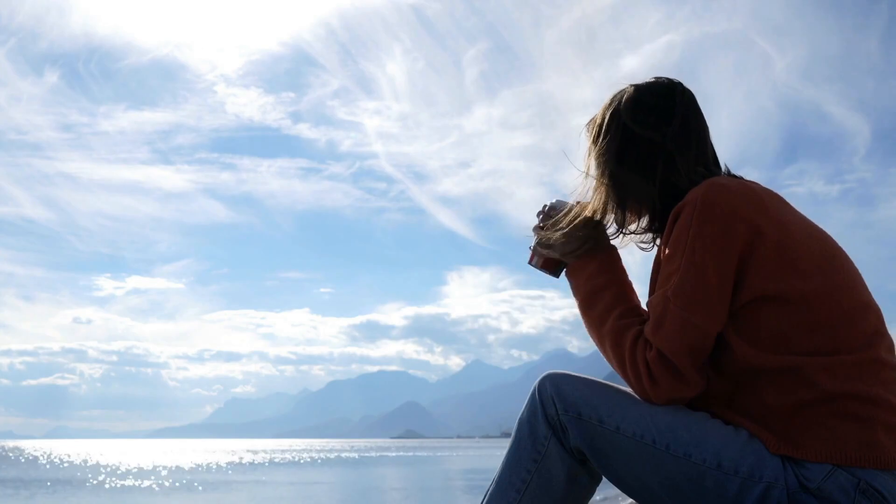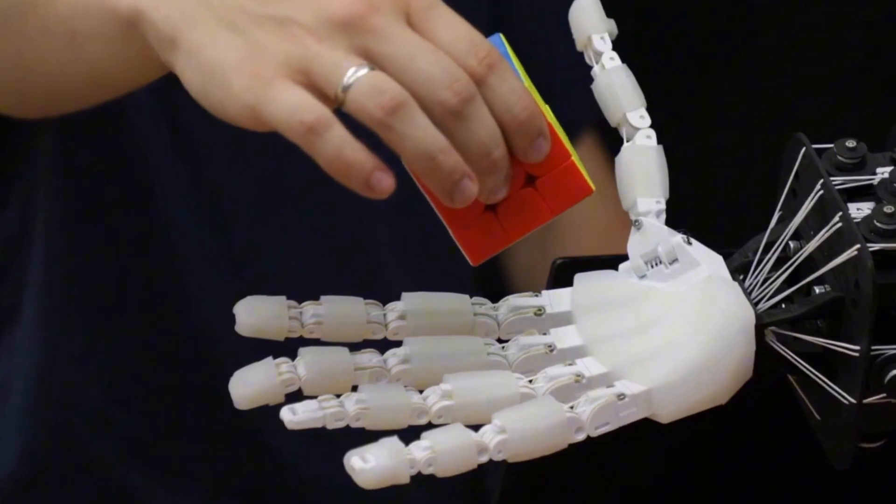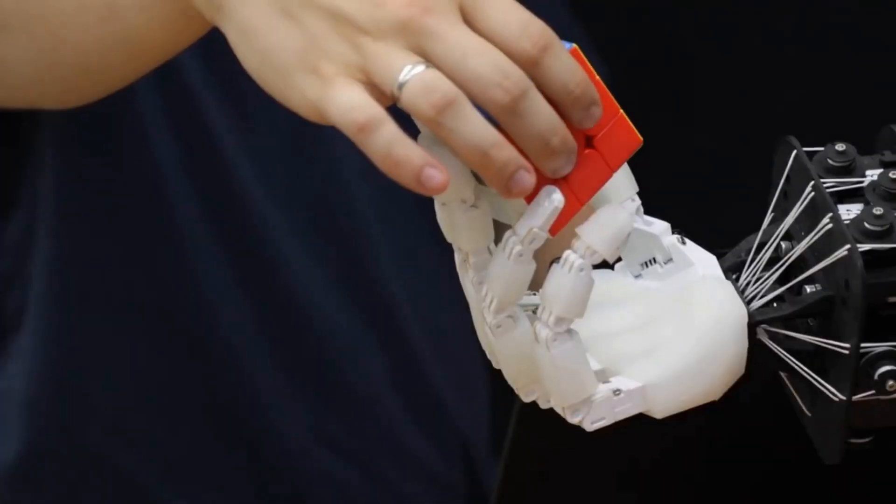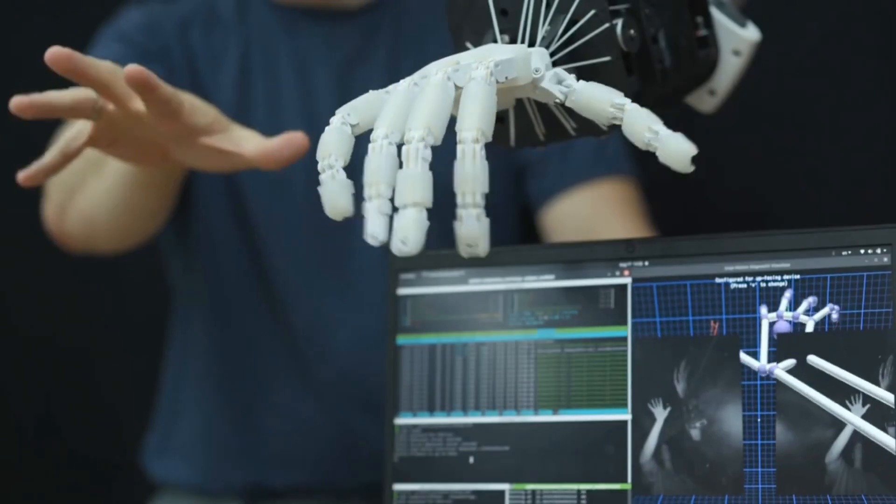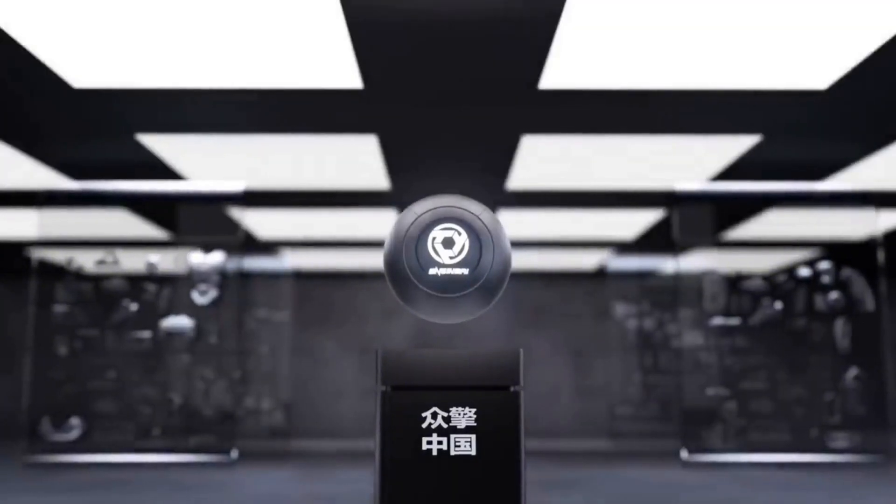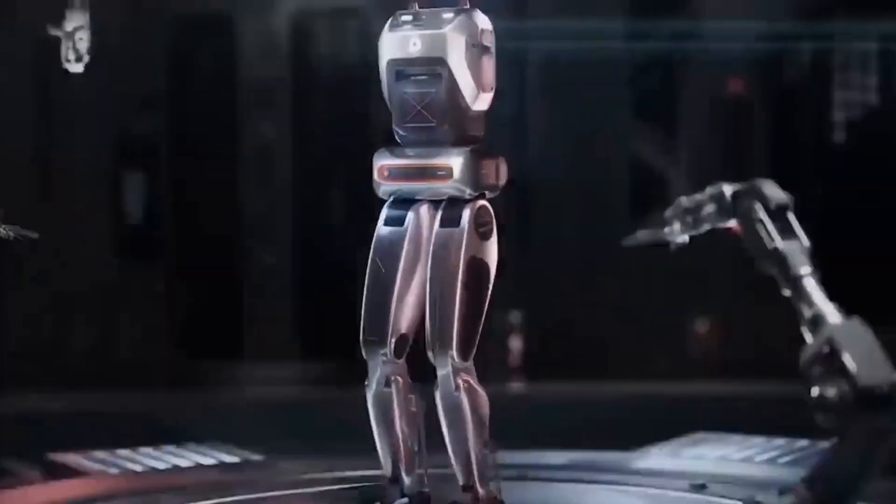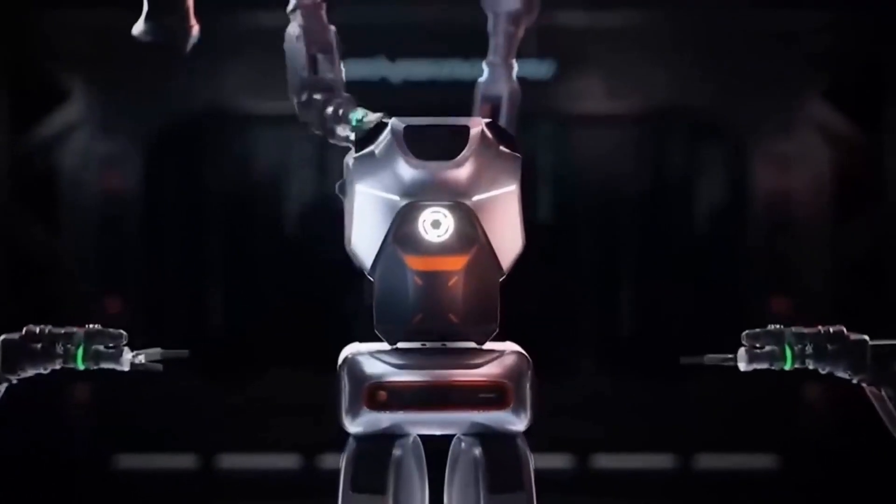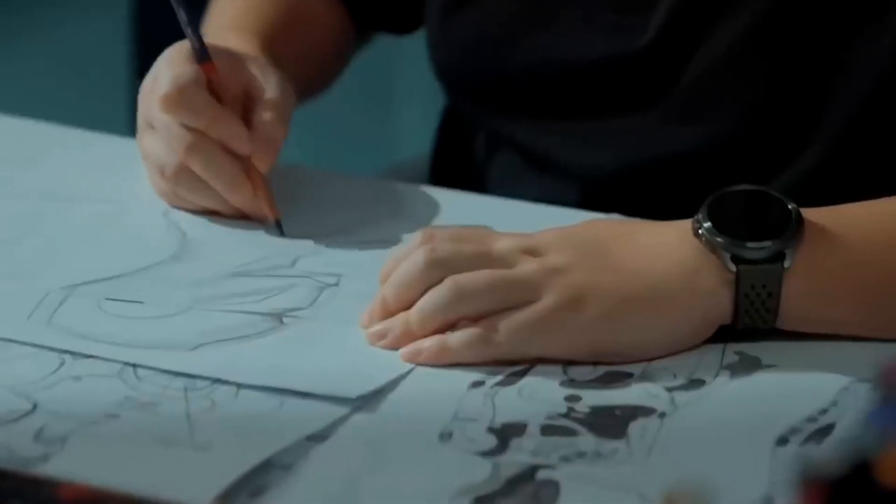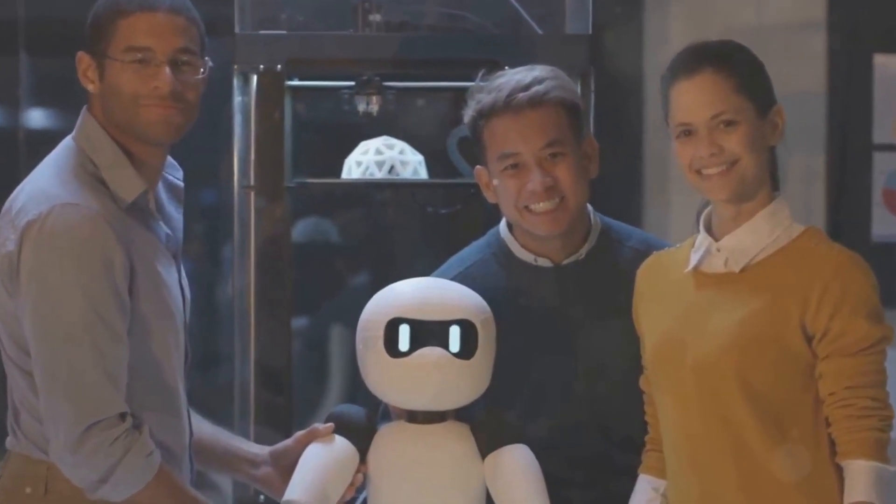However, this also raises an important question. Will we be ready to trust a machine so much? This scenario is fascinating and frightening as it promises to radically change the dynamics of home life. We could have robots taking care of children or providing companionship for the elderly in a much more interactive and engaging way than any current technology. This integration can bring great advantages, but it also requires us to rethink our role and our relationship with these artificial beings.